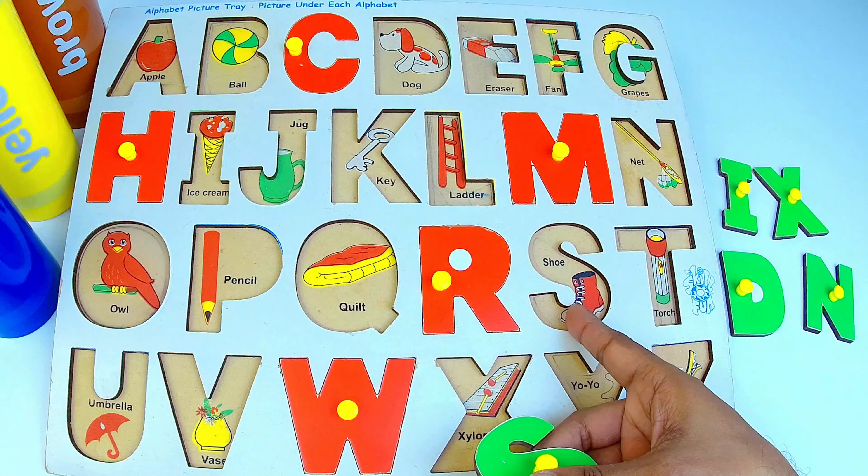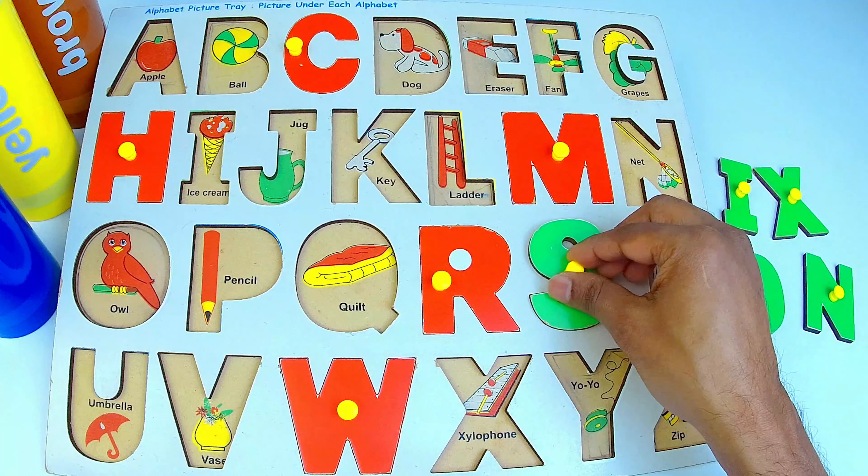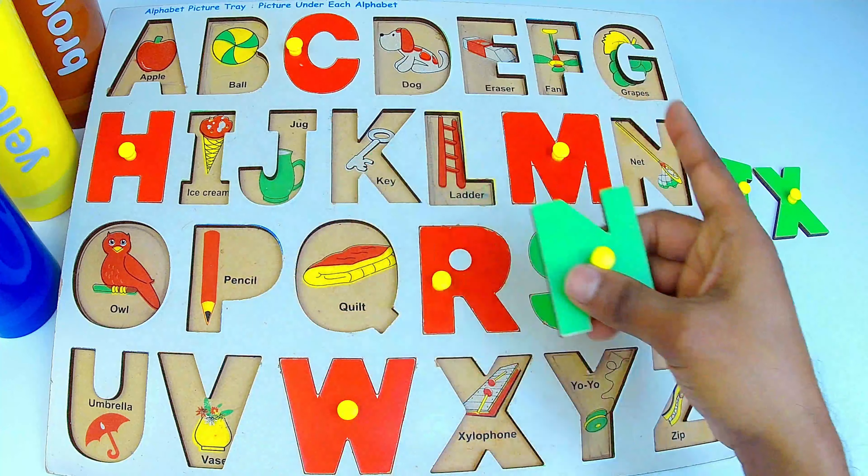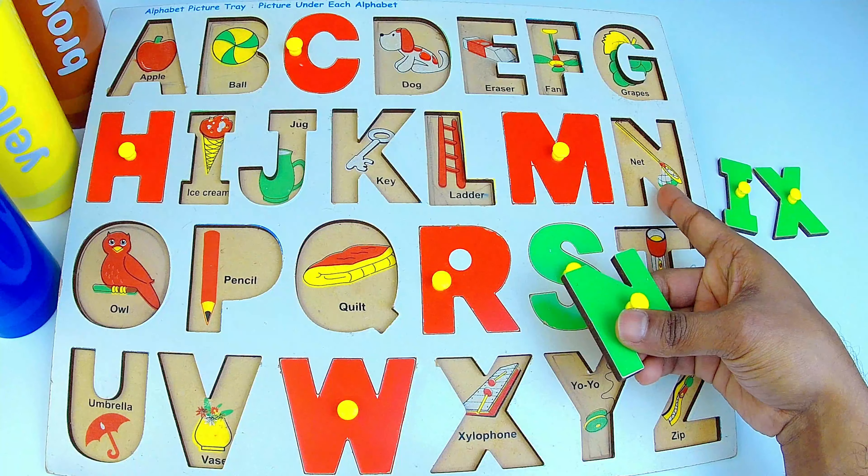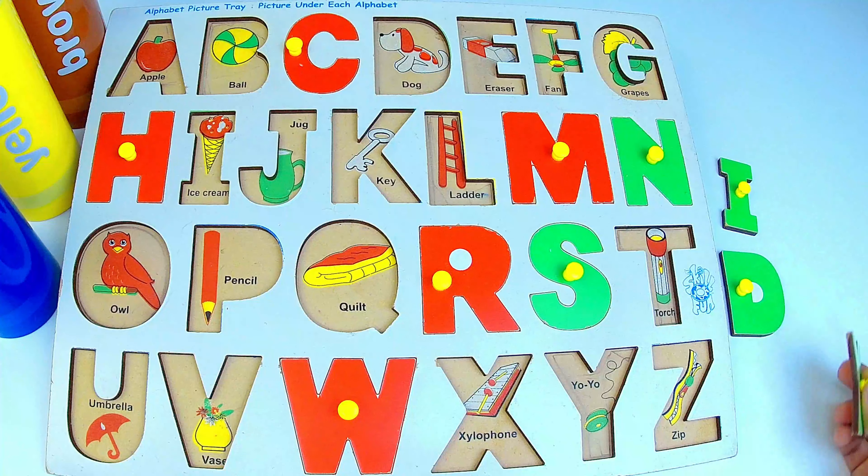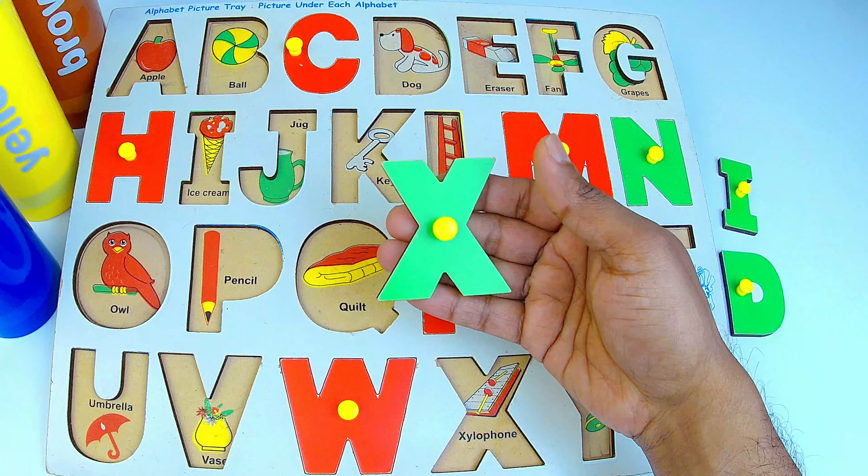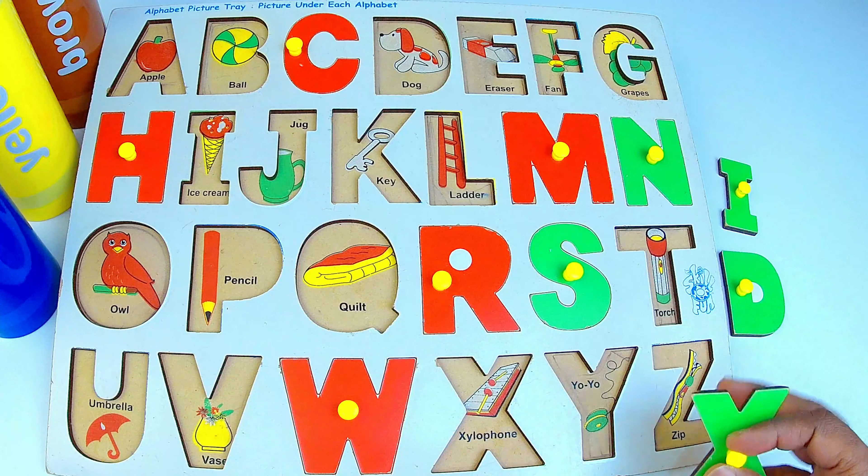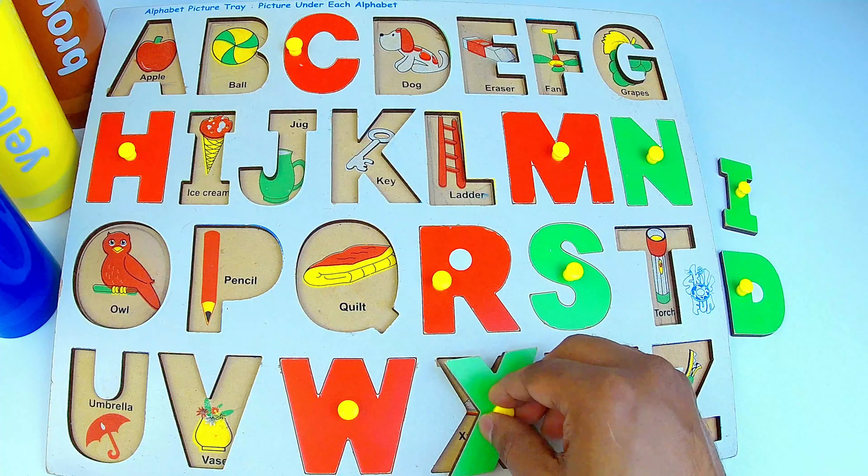S for shoes, N for net, X for xylophone.